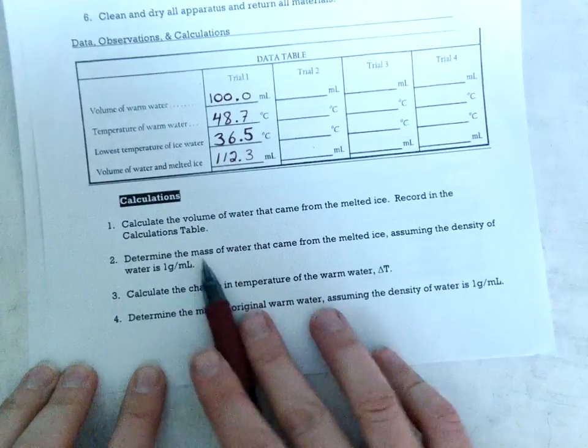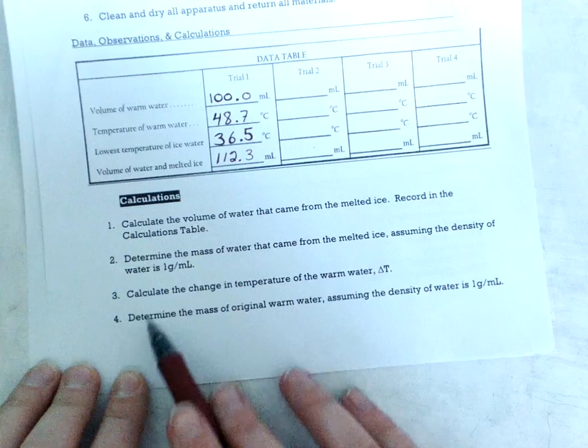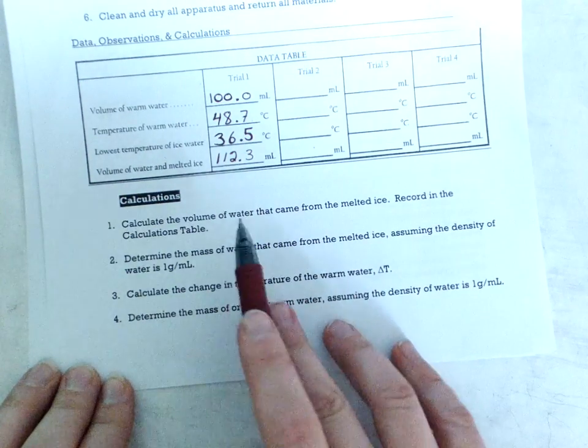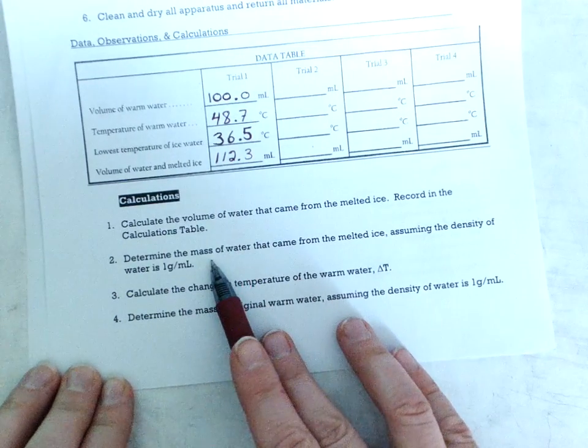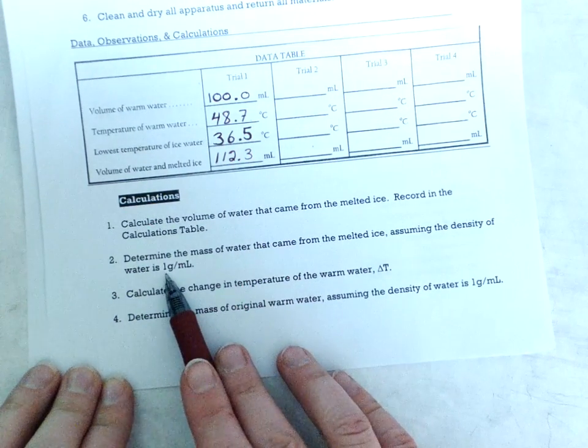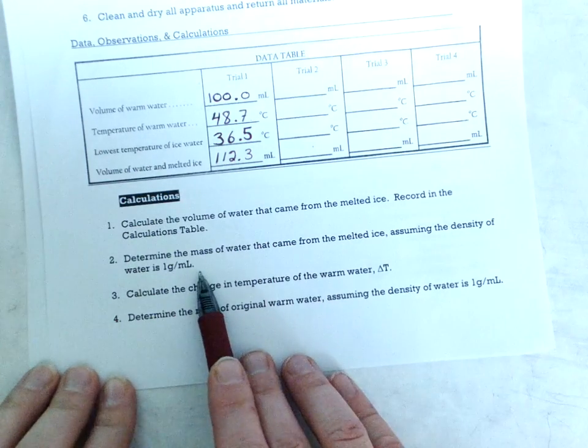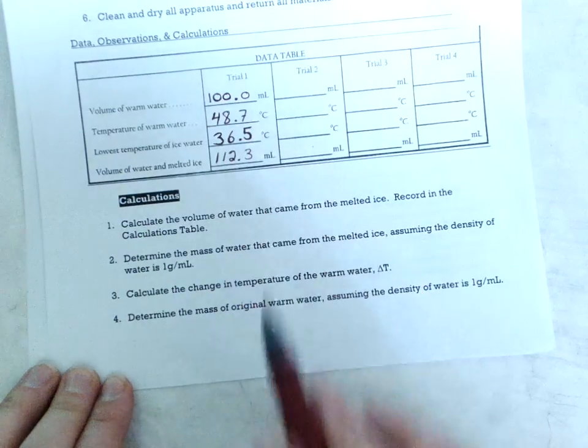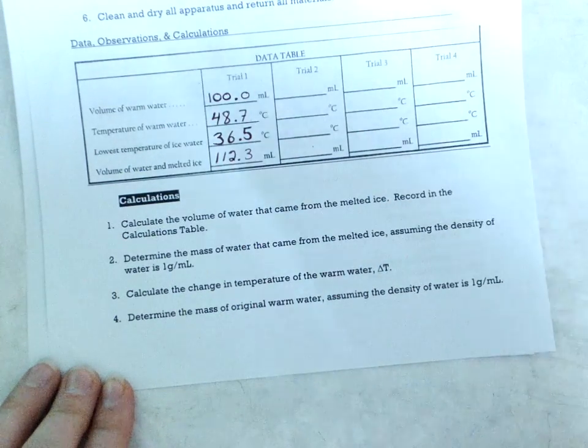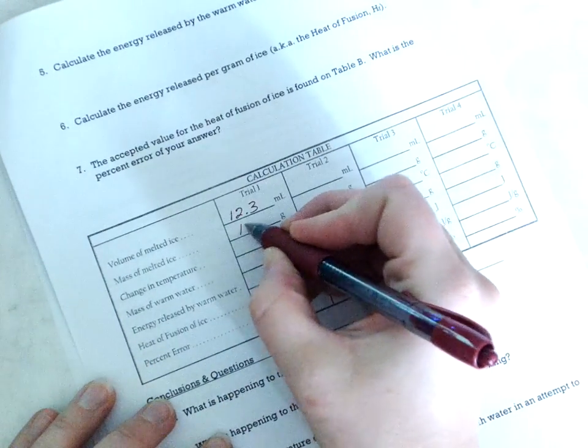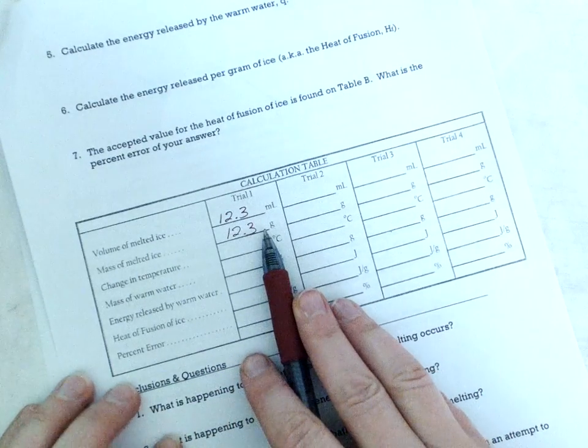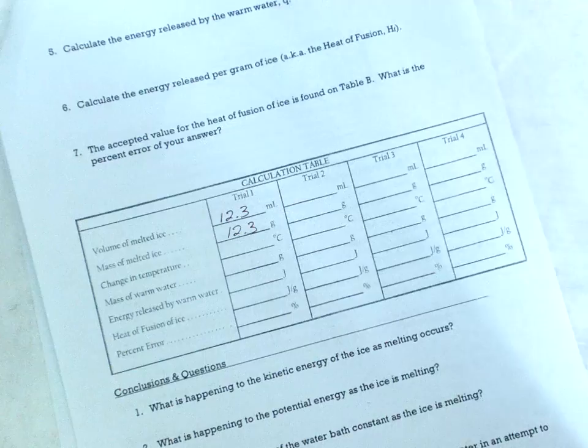Calculation two says determine the mass of water that came from the melted ice, assuming the density of water is one gram per milliliter that's a good assumption. One and two are the same except one says volume and two says mass. But because the density of water is one gram per milliliter they're going to be the same number. And this is a good thing to know about water. If you have 12.3 milliliters you have 12.3 grams.